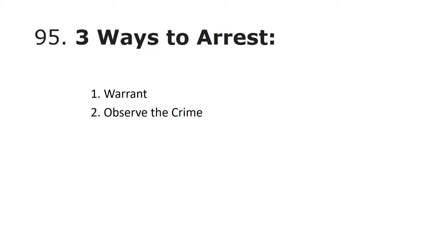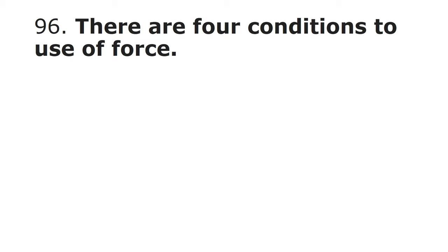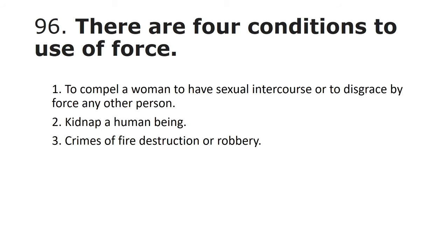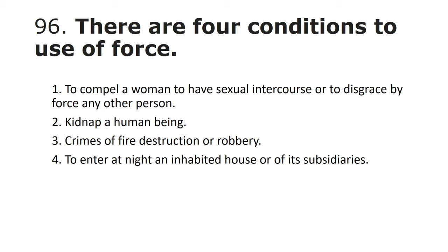Three ways to make an arrest: with a warrant; by observing the crime directly; or through reliable witness statements. There are four conditions where a security guard may use force: when there is no other option; to prevent someone from compelling another person by force; in cases of destruction or robbery; or to prevent someone from entering an inhabited house at night. Most of the time, a security guard should refrain from using deadly force, but in these conditions it may be justified.